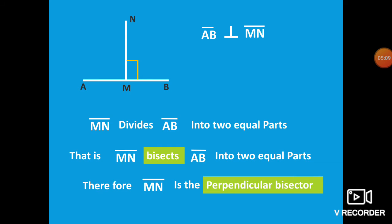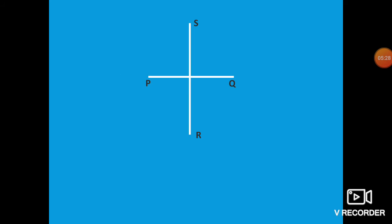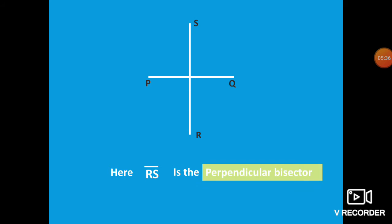MN is the Perpendicular Bisector. Why? Because MN divides AB into two equal parts — that is, MN bisects AB. So MN is the Perpendicular Bisector. Let's see another one: here PQ and RS. RS is the Perpendicular Bisector.